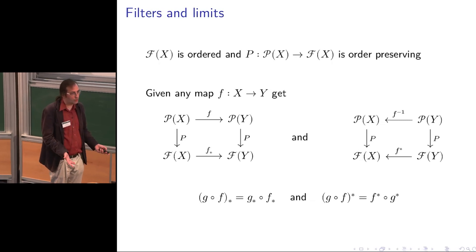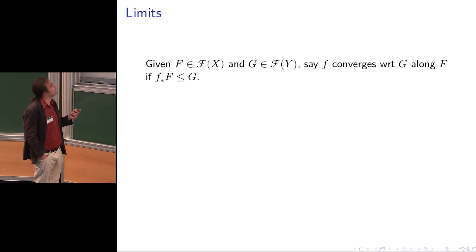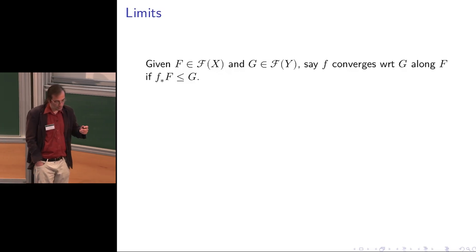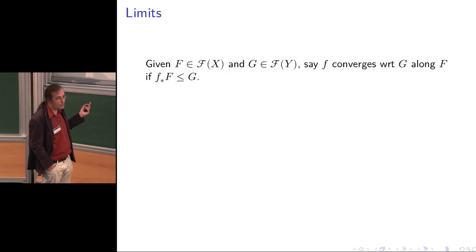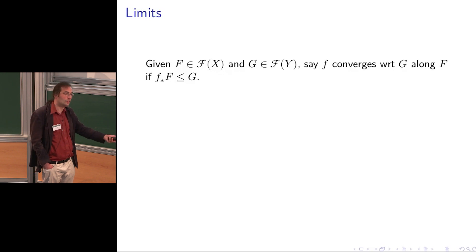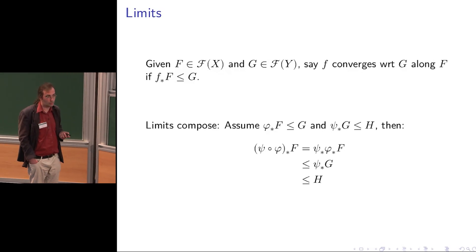There is an actual formal definition of filters, implemented as a set of subsets of X. The neighborhood filter of x0 is indeed the set of neighborhoods of x0 — sets containing an open set containing x0. You can put an order relation on these generalized subsets that generalizes inclusion of subsets of X. You can also generalize direct image and inverse image under a map: if you have a map from X to Y, the direct image sends generalized subsets of X to generalized subsets of Y. With this, there is a single unified definition of limits: f converges along filter F toward filter G if the direct image of F under f is contained in G.